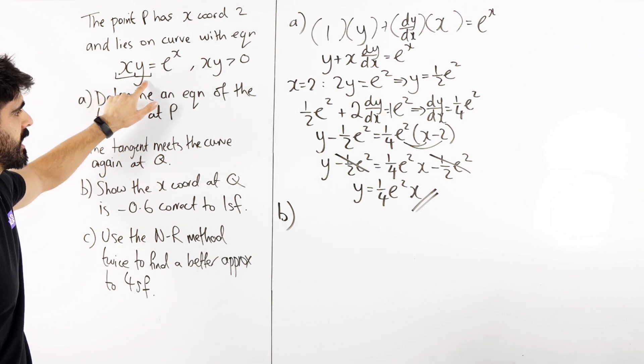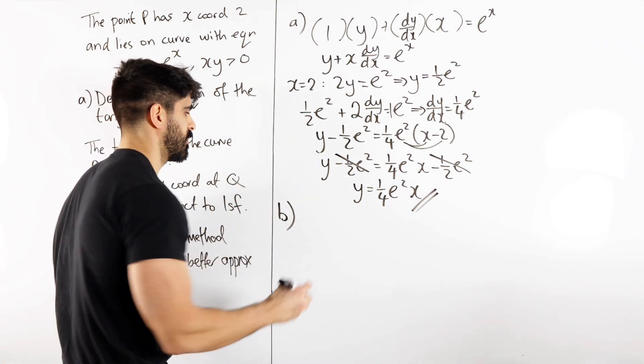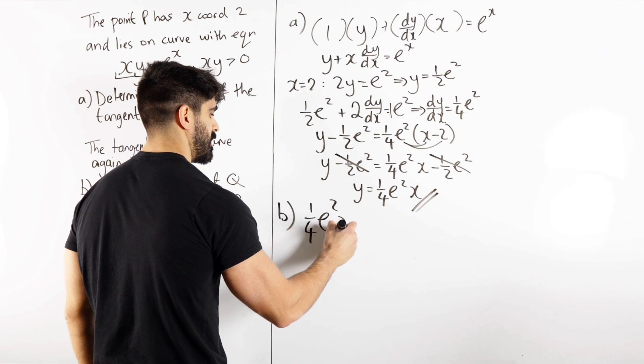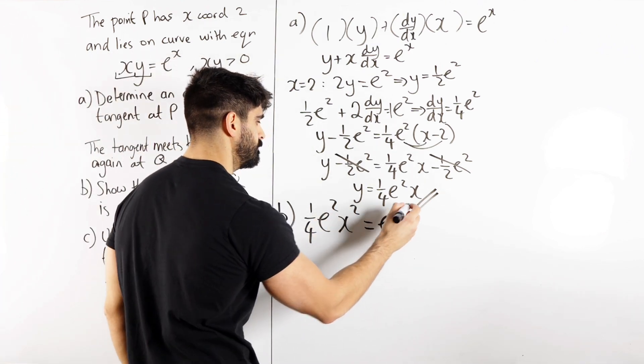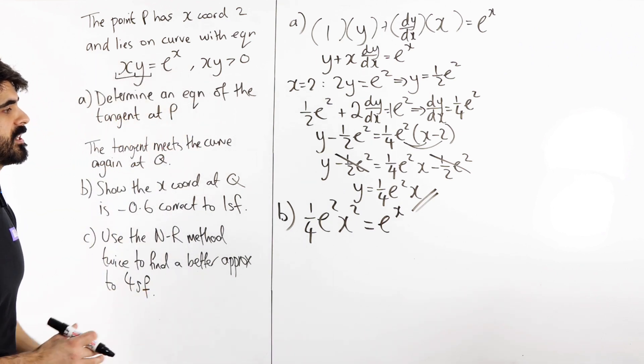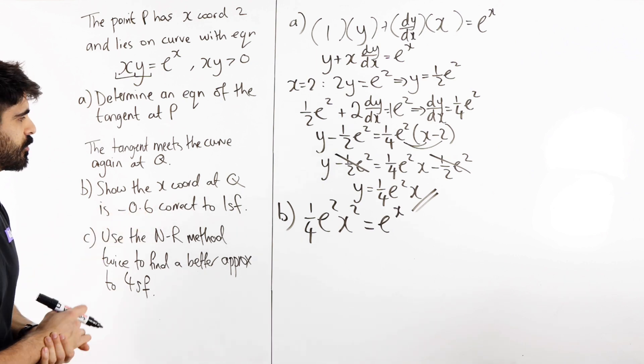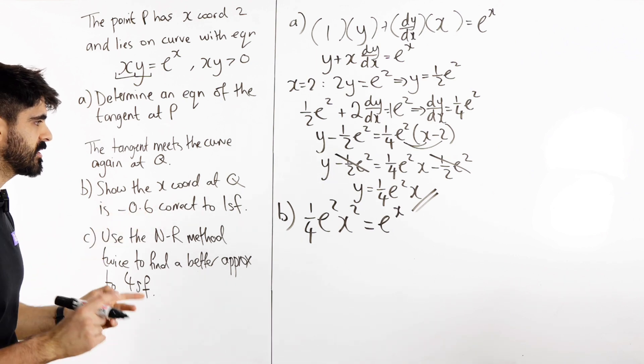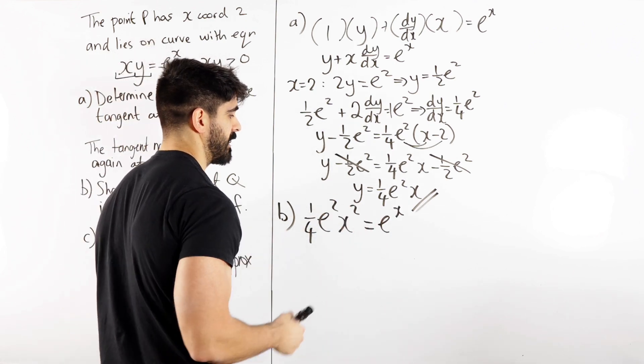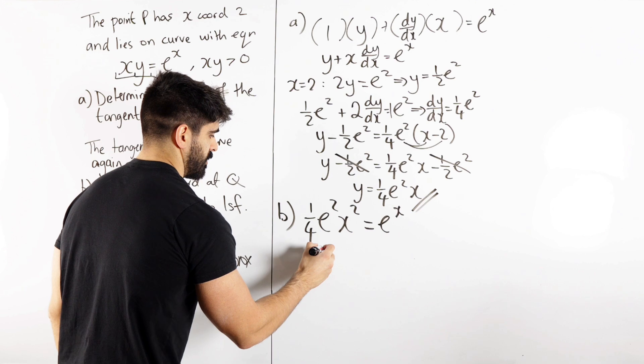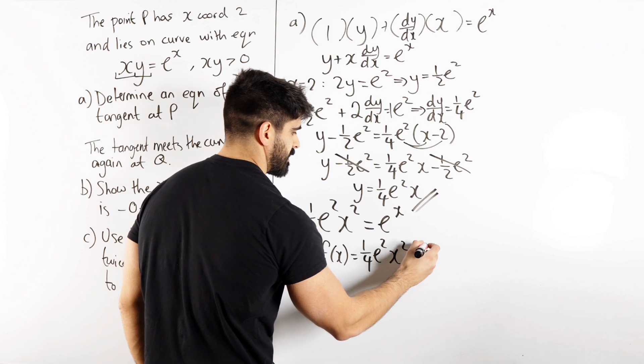So what am I doing? So that there is going to be this, which when we times by x is going to make this x squared. So we get one quarter e squared x squared equals e to power x. Now we can't solve that. This is a non-linear function. So how do we prove that minus 0.6 is correct to 1 significant figure? Well, this is very similar to how we do it in fixed point iteration. We just move everything to one side and we let f of x equal whatever. So let's let f of x equal one quarter e squared x squared minus e to the x.